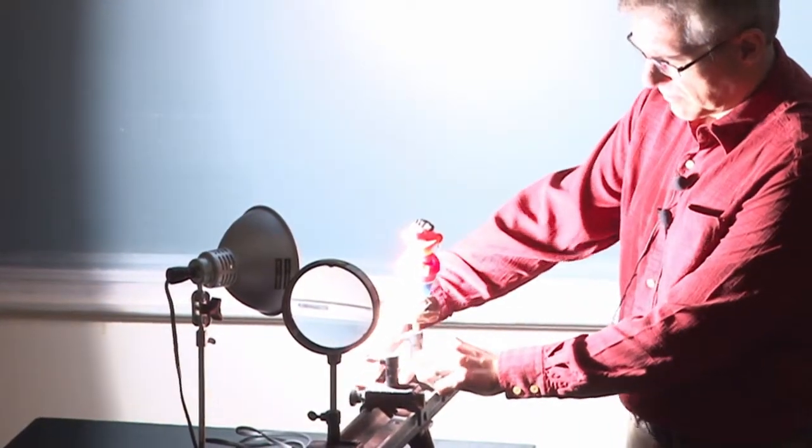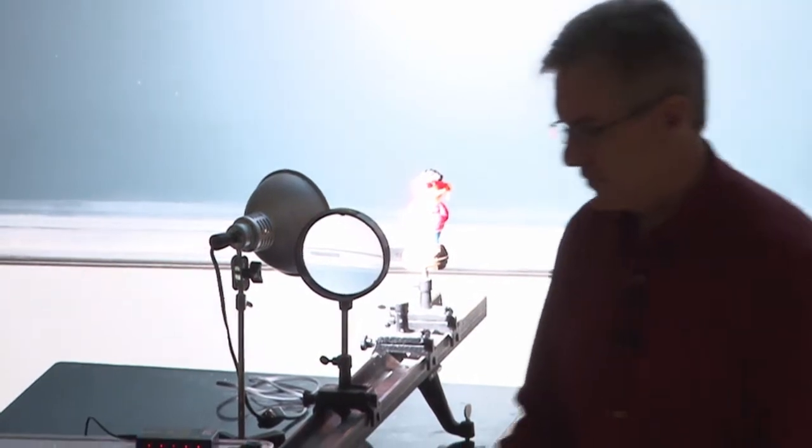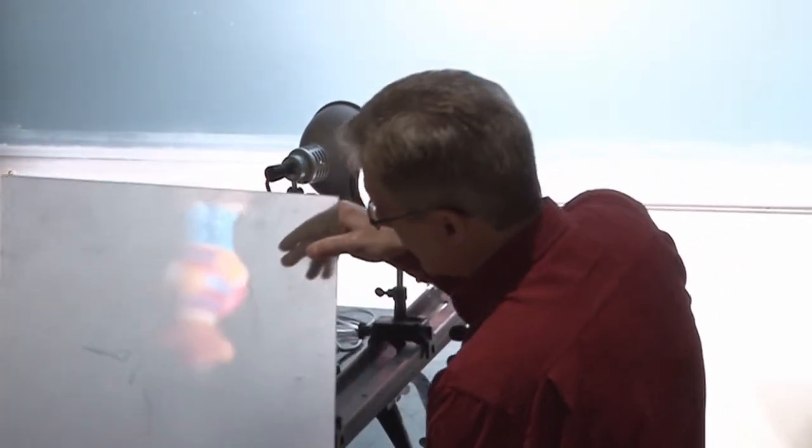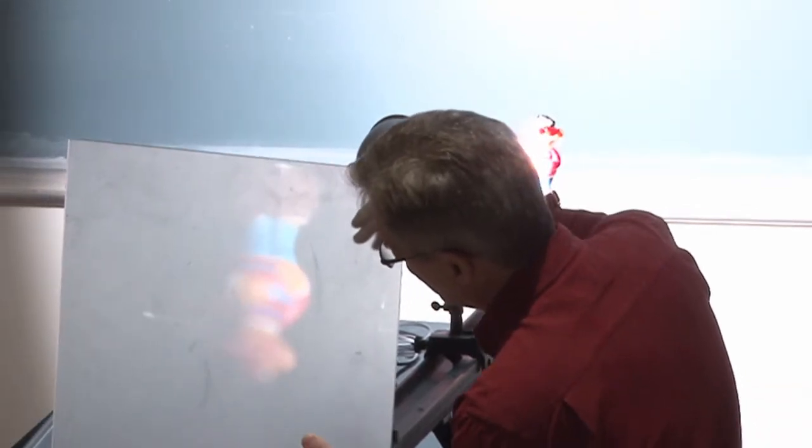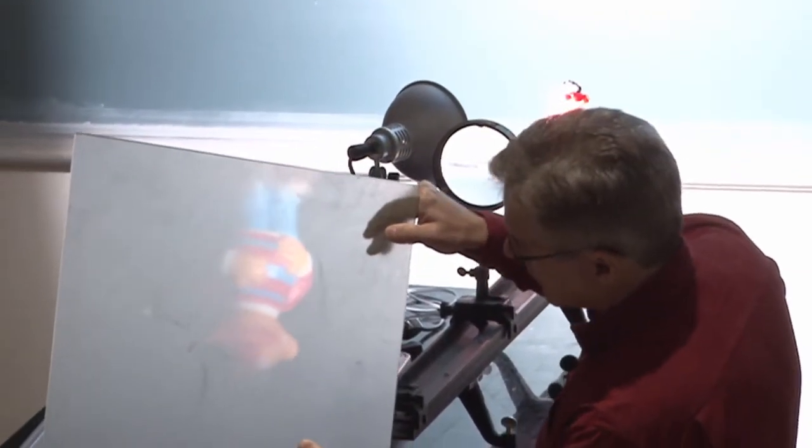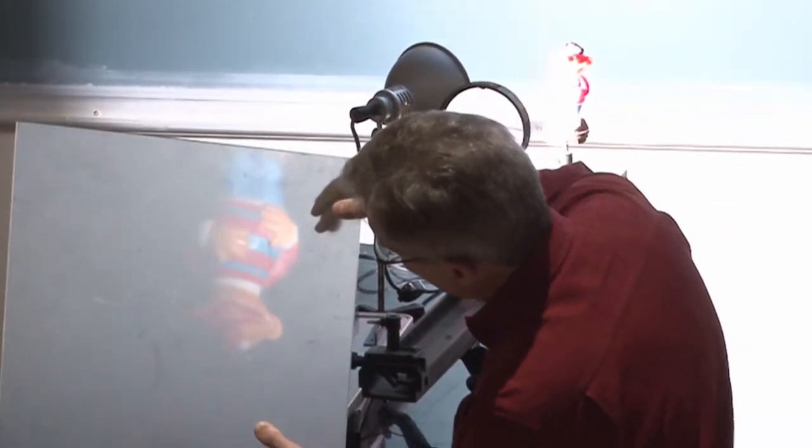Move him here. Now move the light so that it's shining on Ernie, bouncing off and creating an image of Ernie, which is now here somewhere, I think. Right about there. Right, right about here.